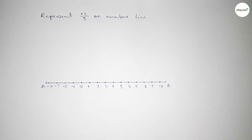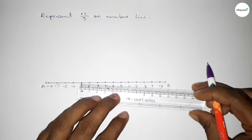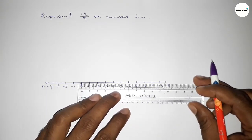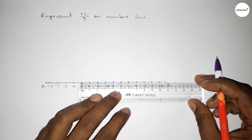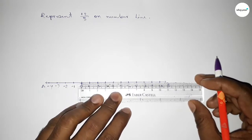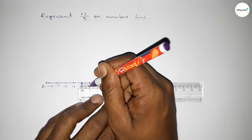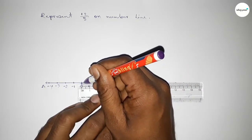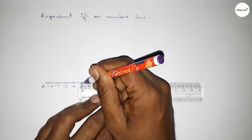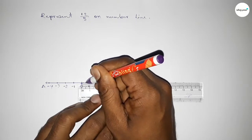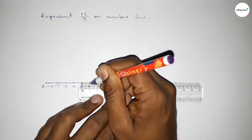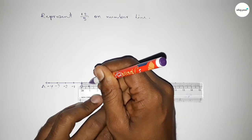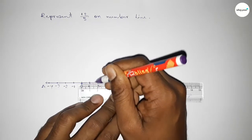Now we have to divide the distance between any two numbers into five equal parts. If we divide the distance between any two numbers into five parts, then the length of each part equals 0.2 units. First, dividing the distance between zero and one: the first part is 0.2, the second is 0.4, the third is 0.6, and the fourth is 0.8.